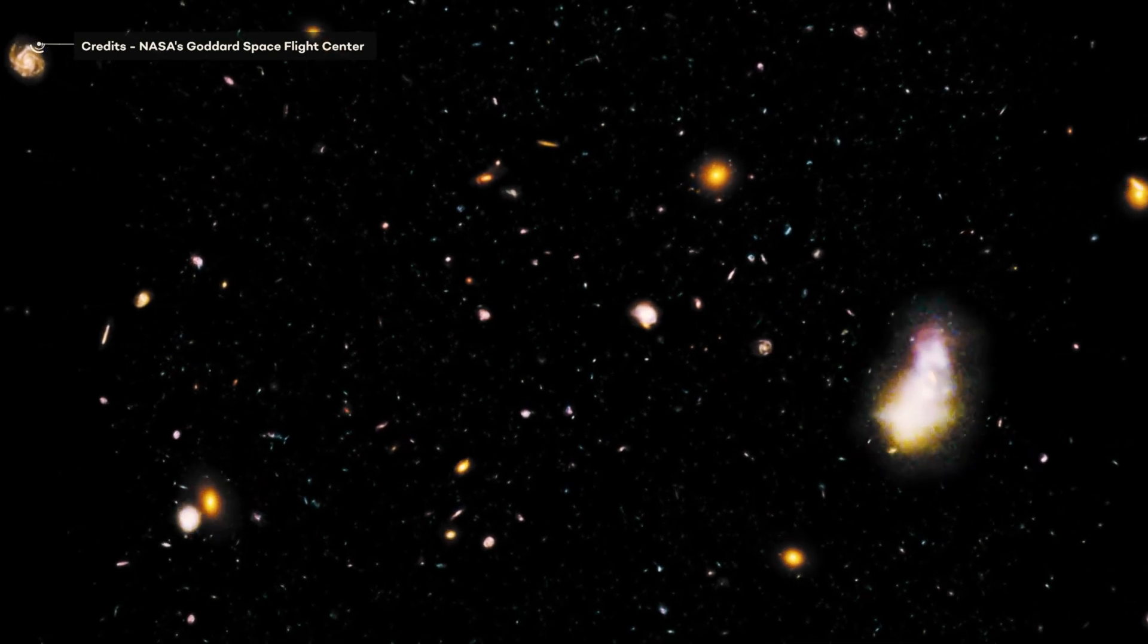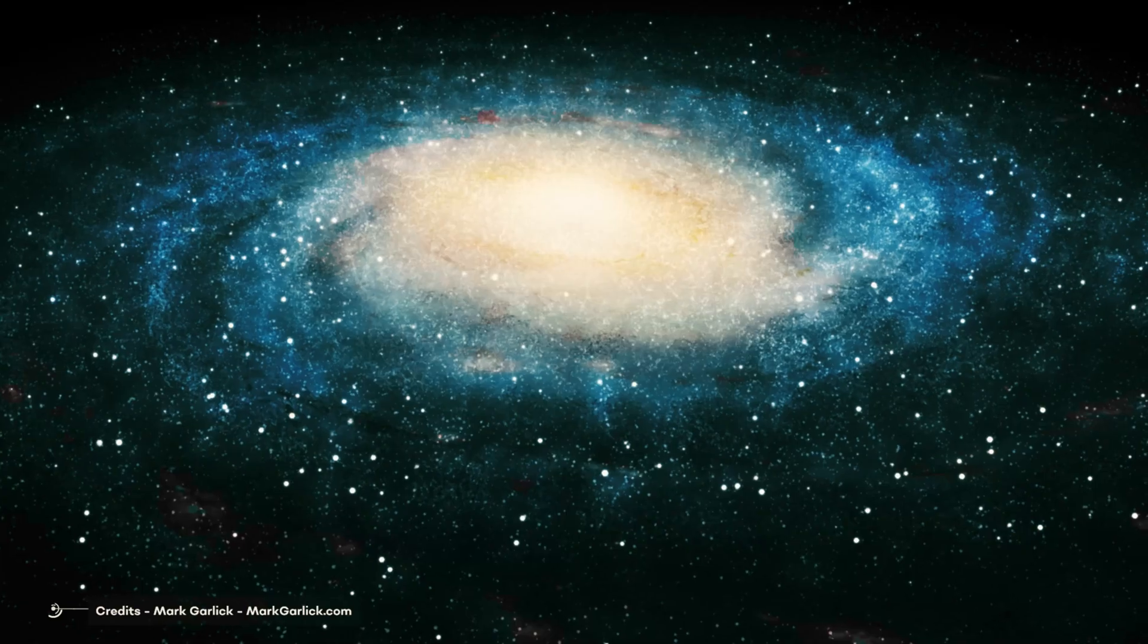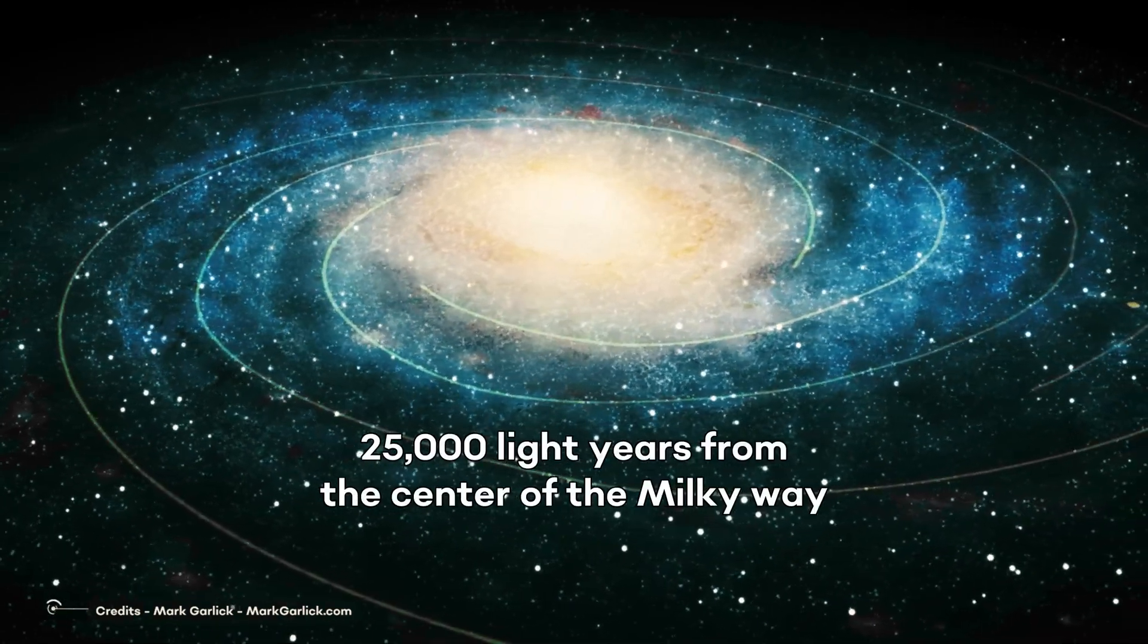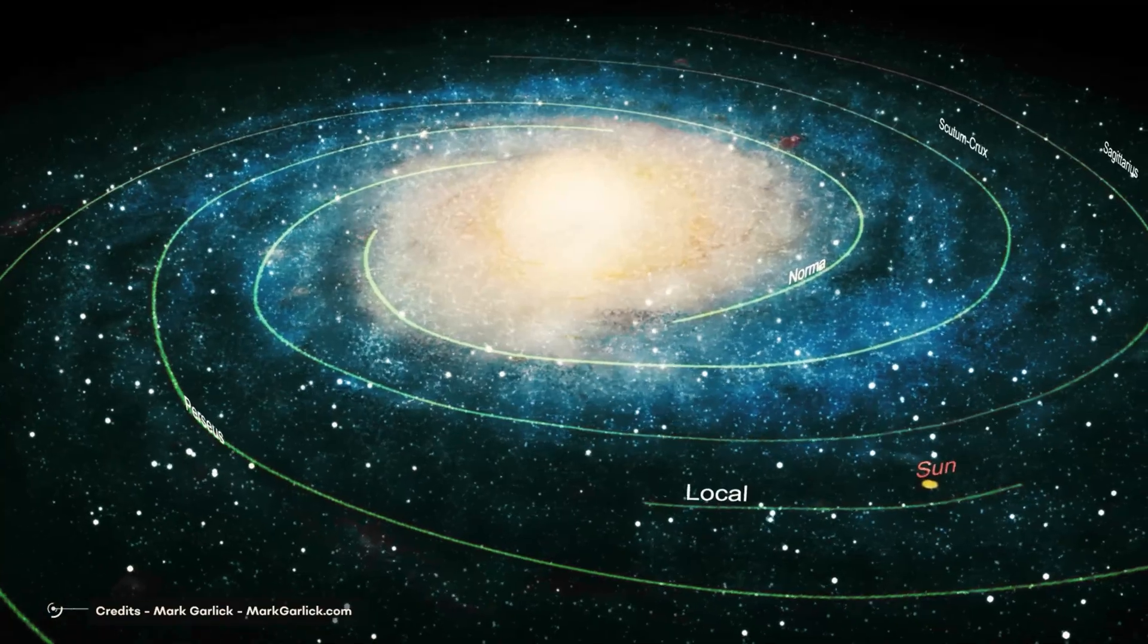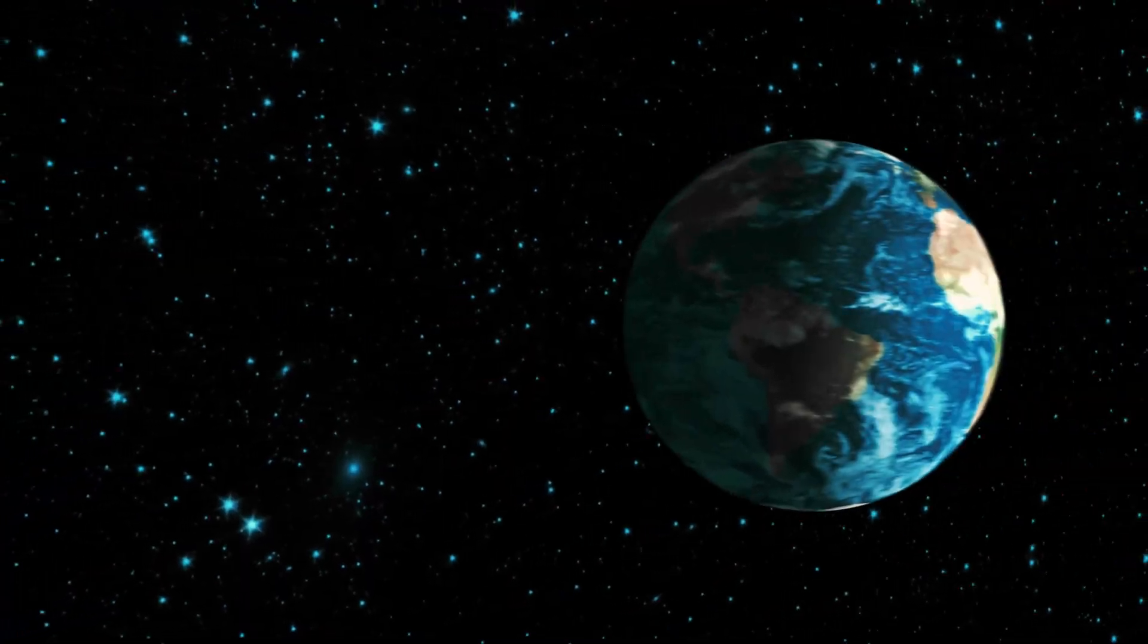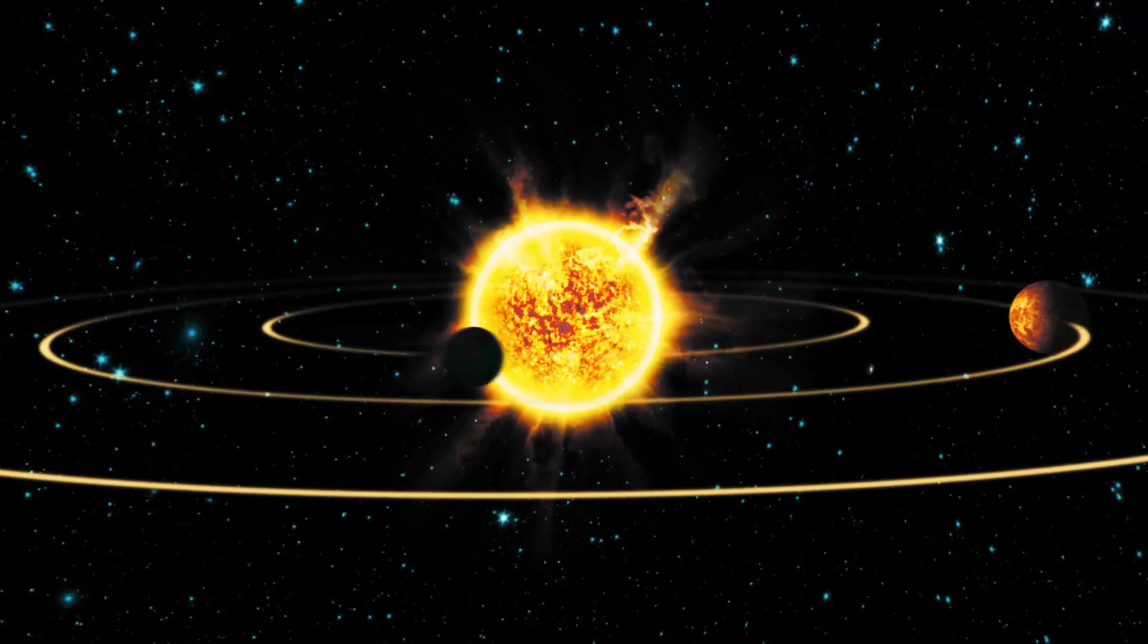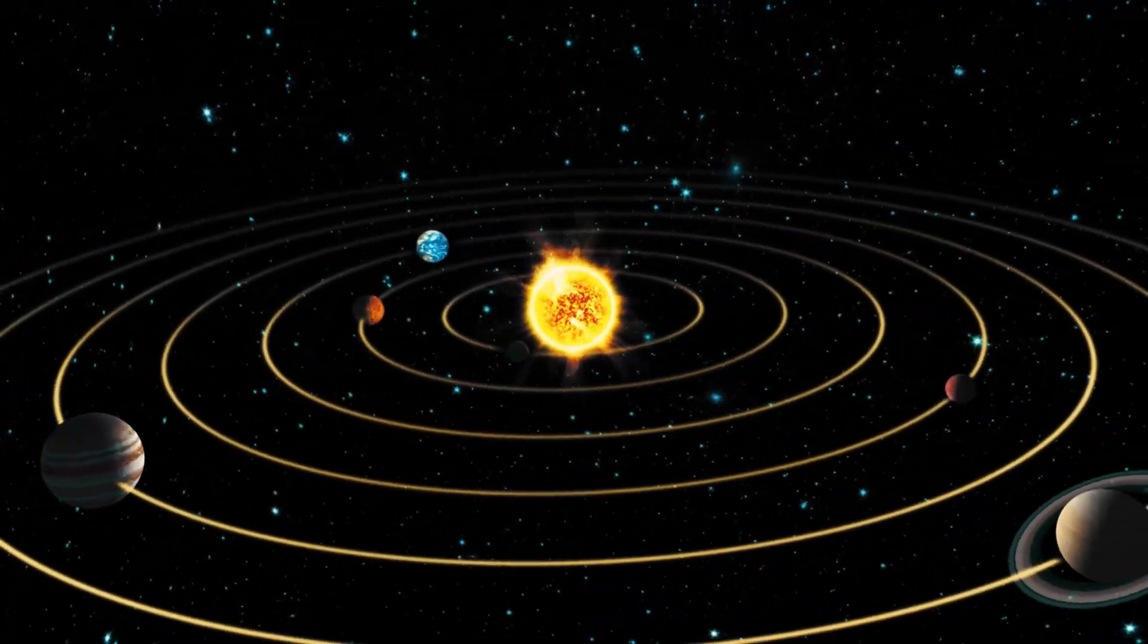On the largest of scales, the universe is dominated by dark matter, but where we live, just 25,000 light years from the center of the Milky Way, normal matter is more dominant than dark matter. That situation is considerably worse here on Earth, in our solar system, than it is in interstellar space.